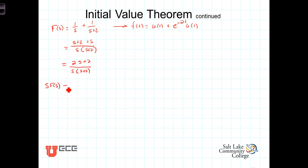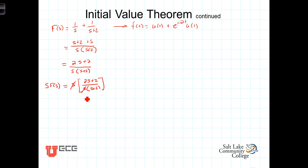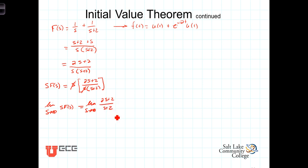So F(s) = (2s+2) / [s·(s+2)]. Then s·F(s) = s·(2s+2) / [s·(s+2)]. We notice in this case that the s terms cancel, giving s·F(s) = (2s+2)/(s+2). We are now in a position to take the limit as s approaches infinity of s·F(s), which equals the limit as s approaches infinity of (2s+2)/(s+2).